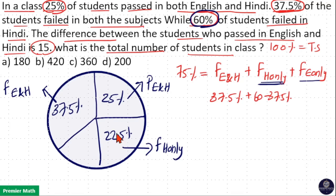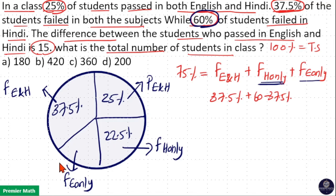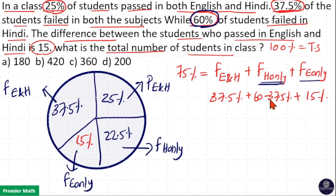The remaining is students who failed in English only, which equals 100% minus all the other three categories. Here 37.5% plus 22.5% equals 60%, and 60% plus 25% equals 85%. So the remaining is 15% — that is, 15% is the students who failed in English only.